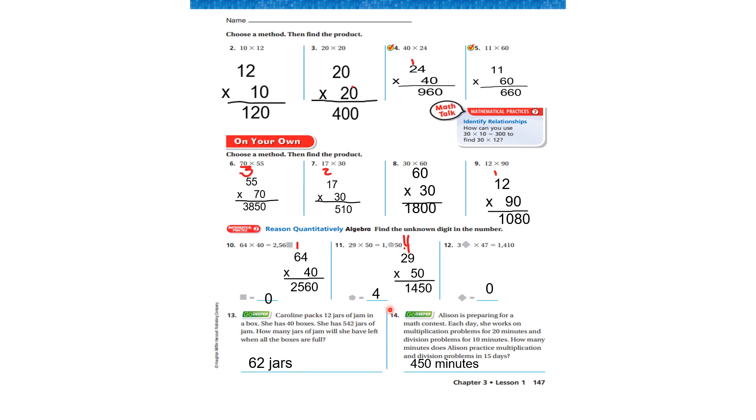Allison is preparing for a math contest. Each day she works on multiplication problems for twenty minutes and division problems for ten minutes. How many minutes does Allison practice multiplication and division problems in fifteen days? Well, fifteen times twenty plus fifteen times ten. Add those products together and you get four hundred and fifty minutes.